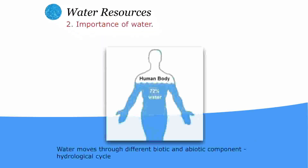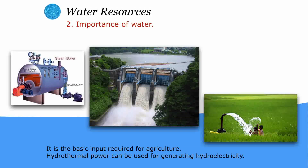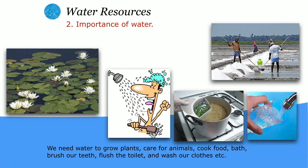Our next topic is water resources. Water is important to us because the human body itself is made up of 72 percent of water. Water moves through different biotic and abiotic components in the hydrological cycle. Many things depend on water, like our industries, production of energy, and agriculture. Plants and animals also live in water, so it is their habitat and they cannot survive without water.